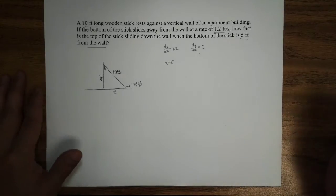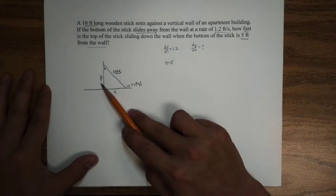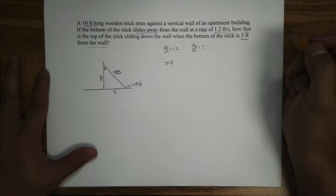Now, I'm going to ask this. If we know that X is equal to 5, is it possible that we can find Y? Well, if you know Pythagorean theorem, then you know that we could find Y.